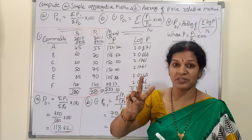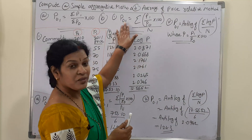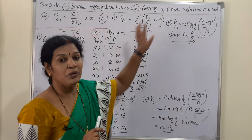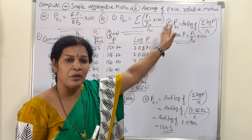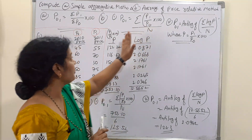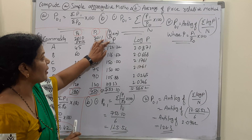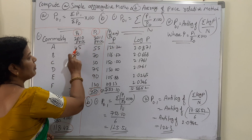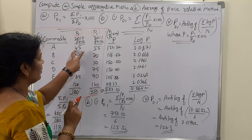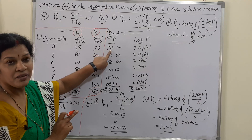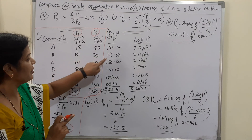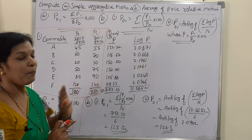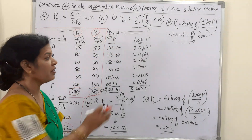Now for the second part — the average of price relative method — we'll do it both ways. For the index number method, we need Σ(P₁/P₀ × 100) / n. We calculate each price relative: for example, 55/45 × 100 = 122.22, and 70/60 × 100 = 116.67, and 30/20 × 100 = 150. Each value of P = (P₁/P₀ × 100) is calculated this way.